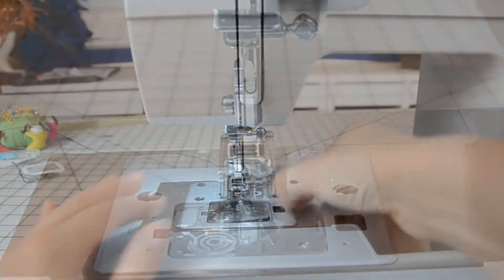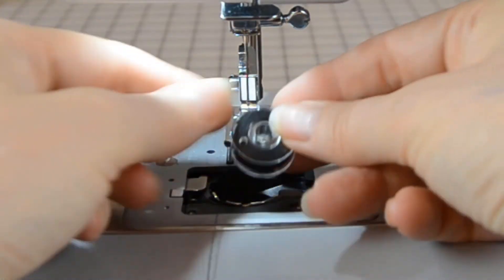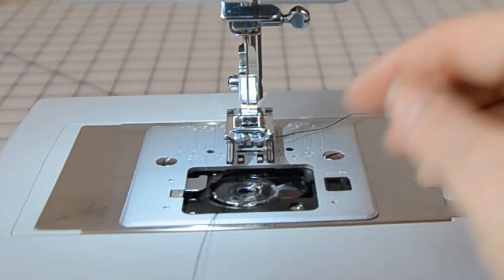Remove the lid to the bobbin holder. Insert the filled bobbin into the holder and slide the thread through the catch on the rim of the holder, as shown.